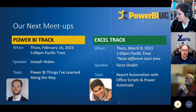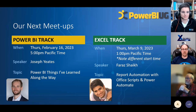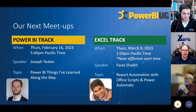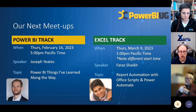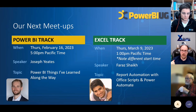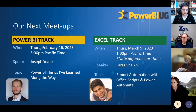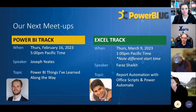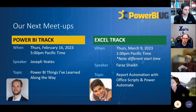Our next meetup is the Power BI track — Joseph Yates is joining us on February 16th at 5 p.m. to present on things he's learned along his Power BI journey, plus the what's new segment. For our Excel track, Faraj Sheikh joins us on March 9th to talk about report automation with Office Scripts and Power Automate — with a 1 p.m. Pacific start time. Both are open for RSVPs now.